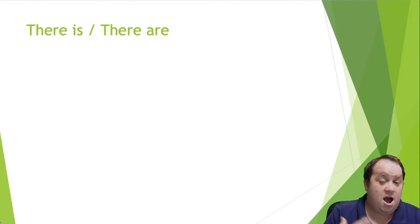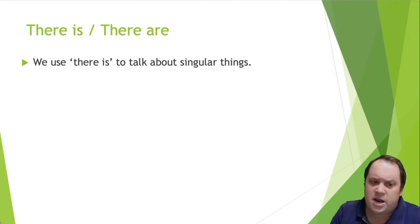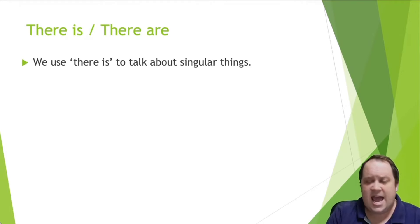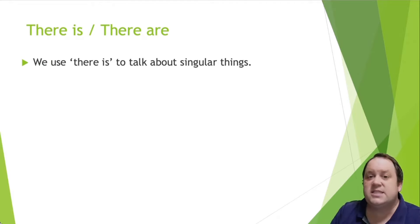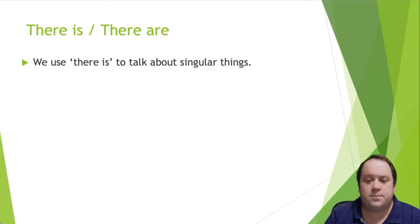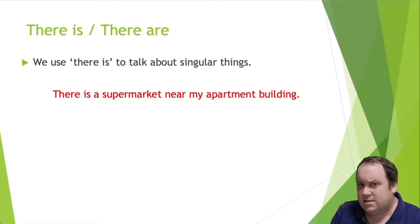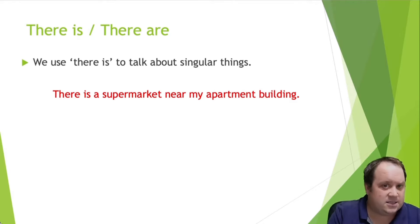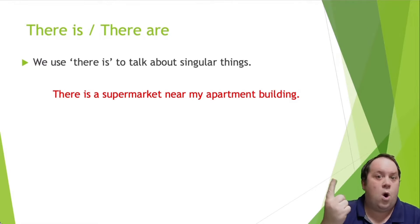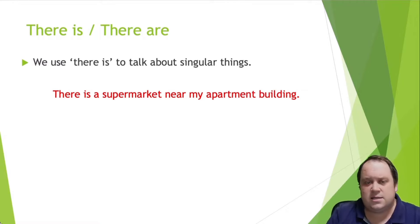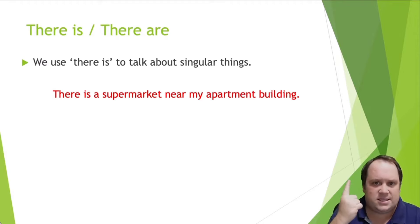Let's take a look at using 'there is' and 'there are.' Generally, we use 'there is' to talk about singular things — only one. For example, 'there is a supermarket near my apartment building,' meaning only one. When we use 'is,' it means singular, only one.